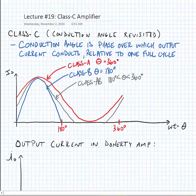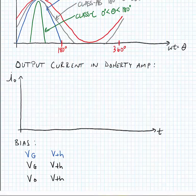One place that this can be used is sometimes in a Doherty amplifier, which we'll look at in a bit. In a Doherty amplifier, we have two amplifiers: a main amplifier and an auxiliary amplifier. The main amplifier carries the bulk of the current, and the auxiliary amplifier carries the remainder of the current.